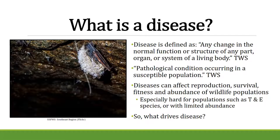Diseases can affect the reproduction of animals, survival, fitness, and abundance of wildlife populations. It's especially hard for threatened and endangered species — their populations are already low, their habitat is changing, and they're less resilient. They can't come back from things as quickly, so they're more susceptible to diseases. Sometimes animals go extinct before we even know about them, and we can say it was because of disease or small population size.